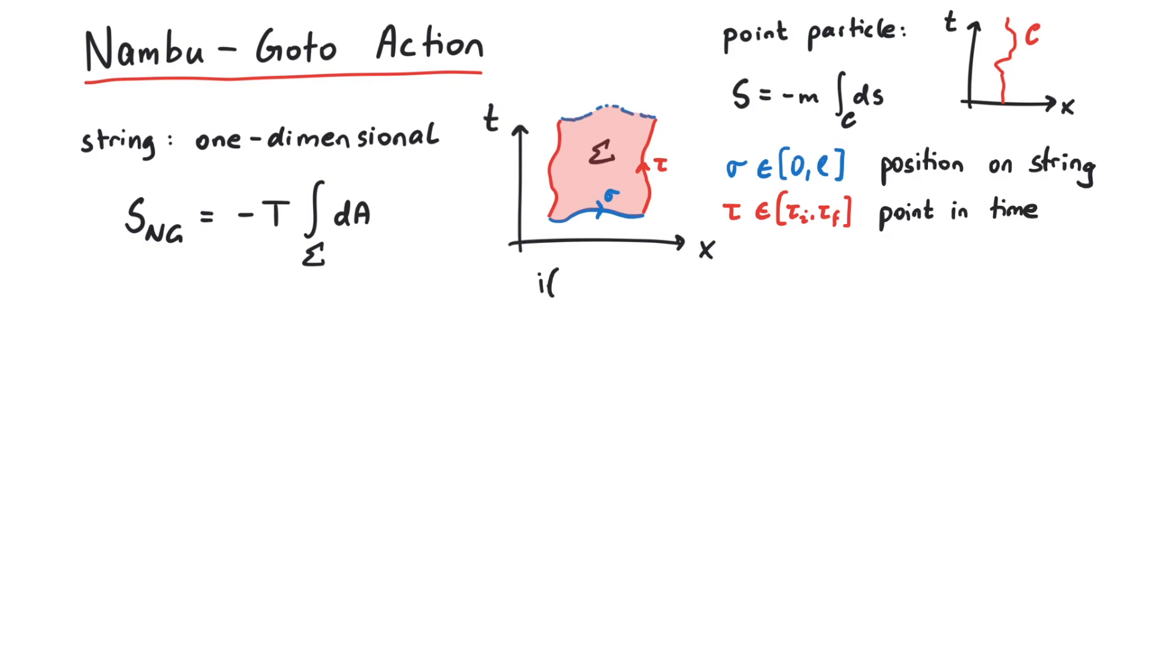If the world sheet of the string were perfectly flat, the infinitesimal area element dA would just be d2 sigma. However, since we cannot assume that the string is always perfectly flat, we are integrating over a region that is not flat everywhere.